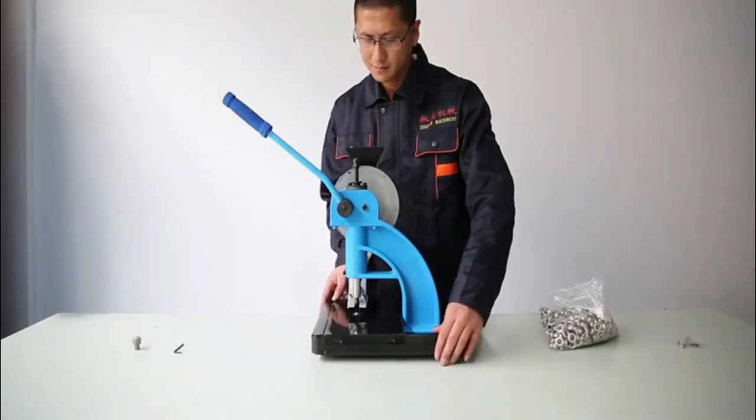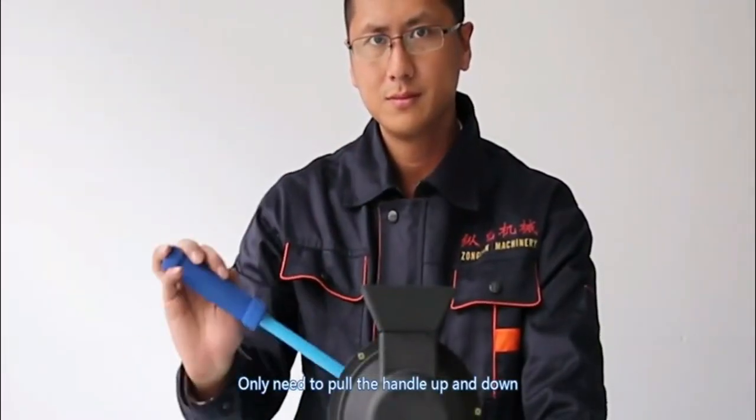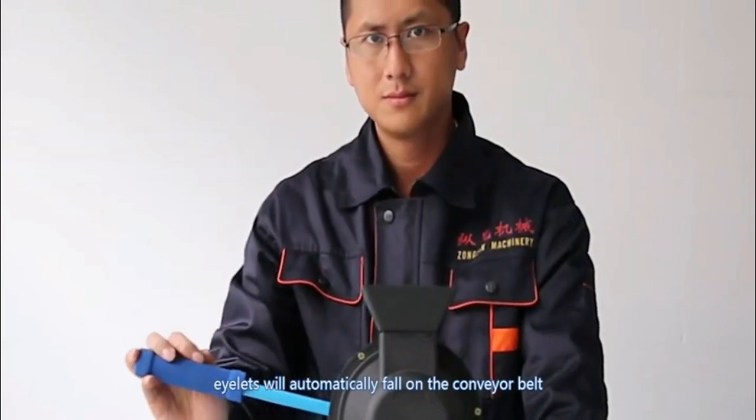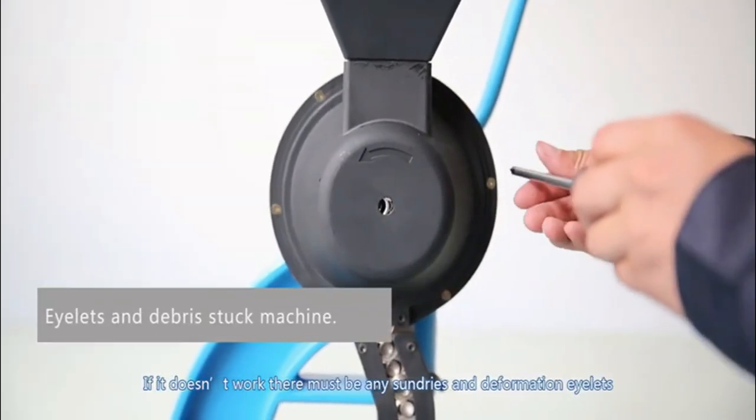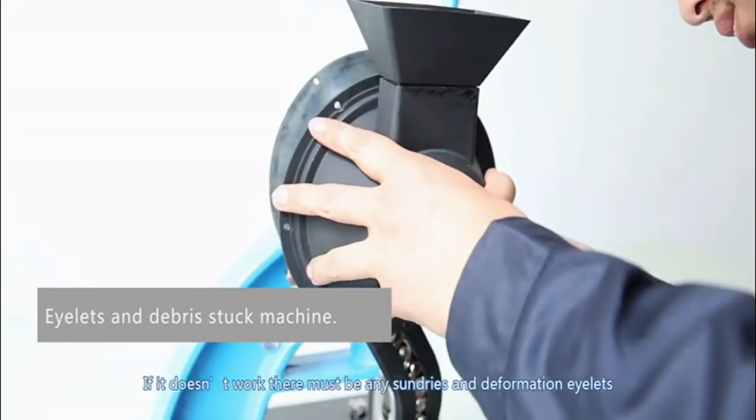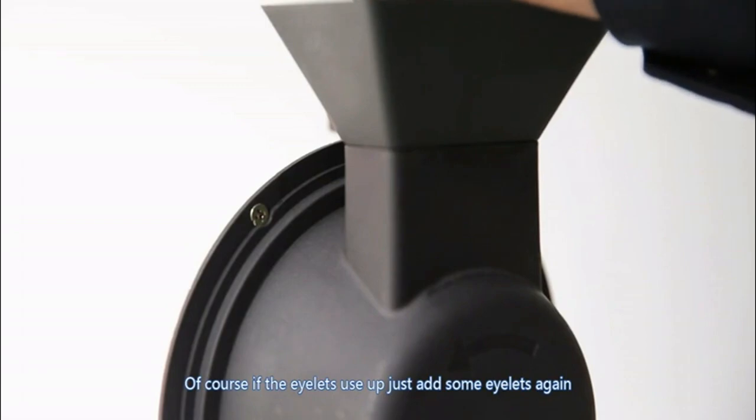About working process. Our machine works very simply. Only need to pull the handle up and down. Eyelets will automatically fall on the conveyor belt. If it doesn't work, there must be some grease and deformed eyelets. Of course, if eyelets use up, just add some eyelets again.